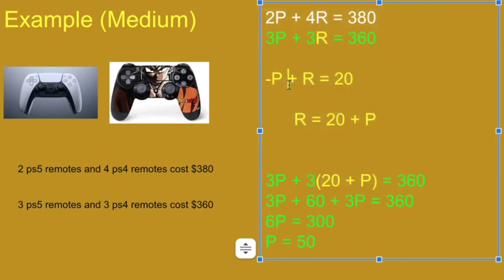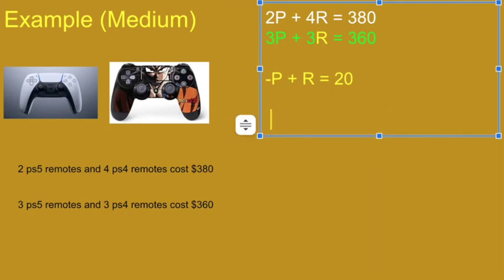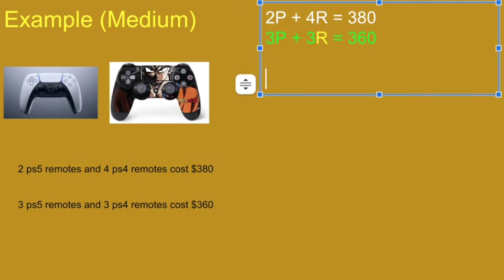Actually, you could subtract it the other way. Green minus white instead of white minus green. And then we would have 3 minus 2, positive 1P plus negative R equals negative 20. Same kind of deal.